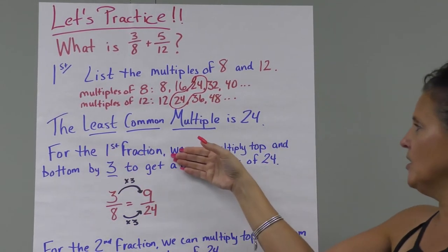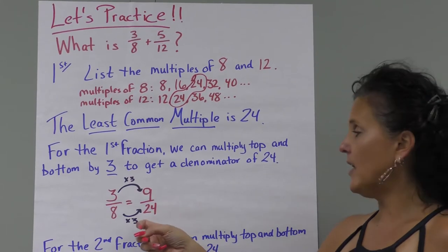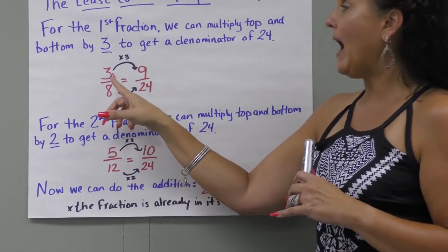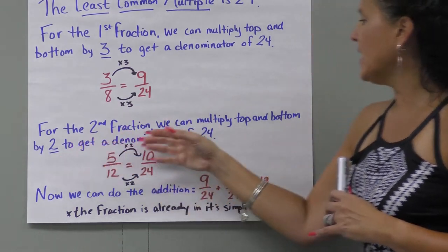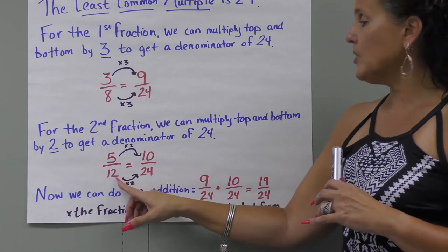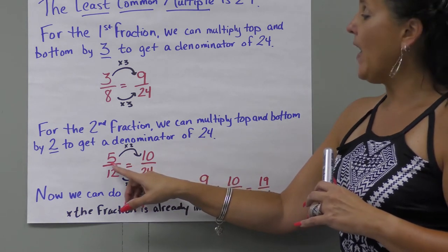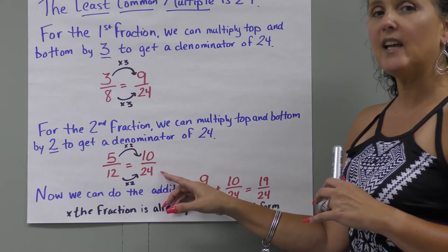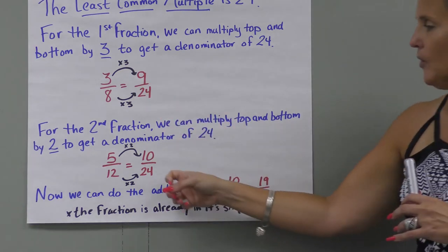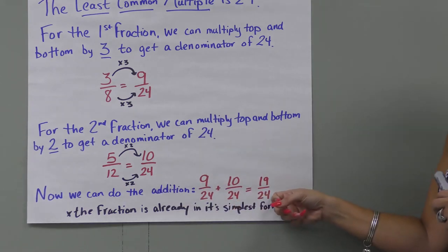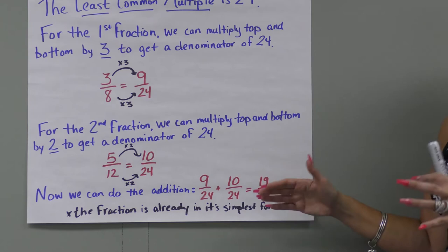For the first fraction, we multiply top and bottom by three: three times eight equals 24, and three times three is nine — so nine twenty-fourths. For the second fraction, we multiply top and bottom by two: two times 12 equals 24, and five times two is ten — so ten twenty-fourths. Now we have like denominators and can add: nine twenty-fourths plus ten twenty-fourths equals nineteen twenty-fourths. This is already in its simplest form — that's our final answer.